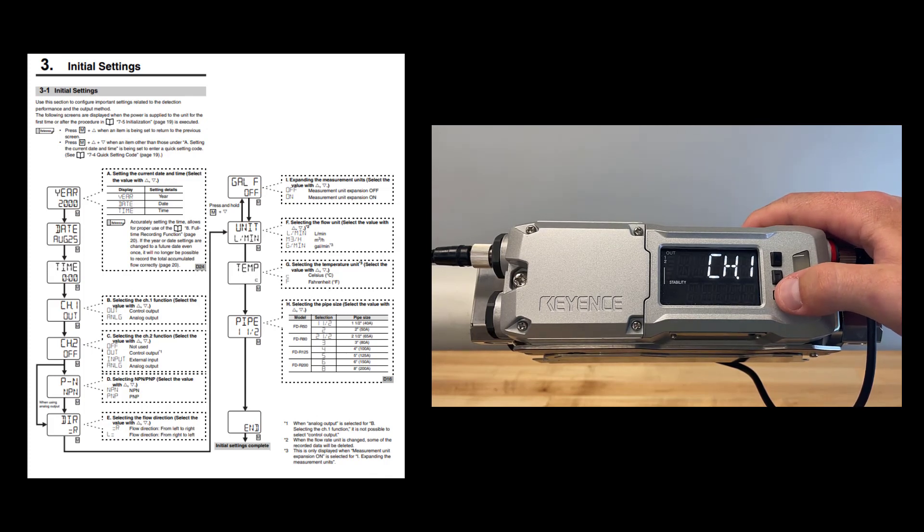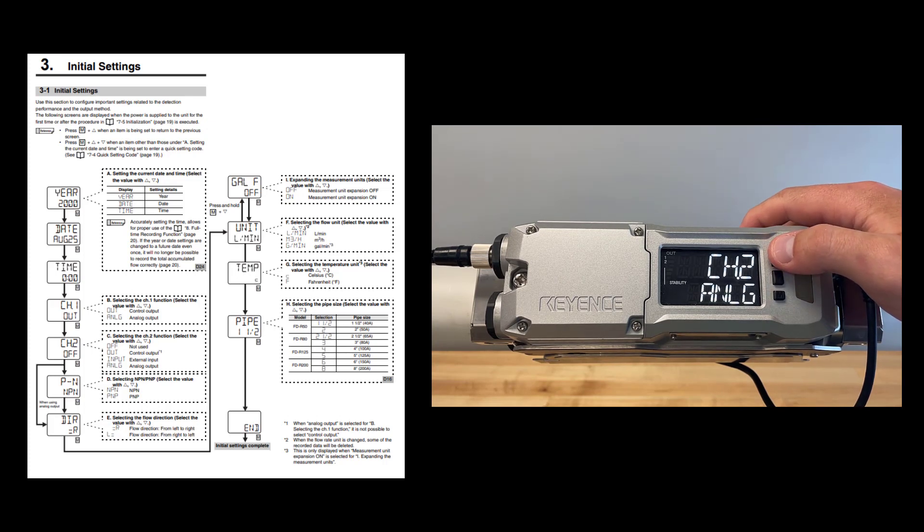Next, you can select the function of your output 1 wires being a binary output, or a 4 to 20 or 0 to 20 milliamp analog output. After that, select the function of your channel 2 or output 2 wires being off, again, an analog 4 to 20 or 0 to 20 milliamp output, an external input to the FDR, or a secondary discrete output.